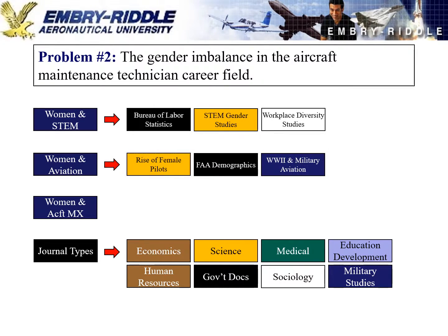As I narrow the review down to women in aviation, I can look at pilots first since that's the fastest growth area for women in aviation, examining how that transformation has taken place in science and aviation journals. I can also look at FAA demographics — the FAA website has documents showing that women are most predominant in flight attendant jobs, while the maintenance field is around 2.5%. Military studies journals are also valuable since the spike in women in aviation was largely driven by World War II and military aviation.